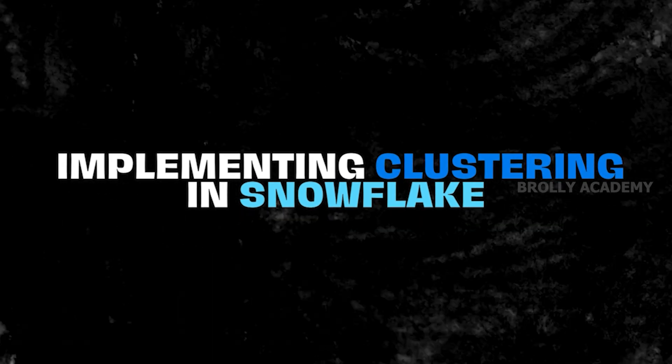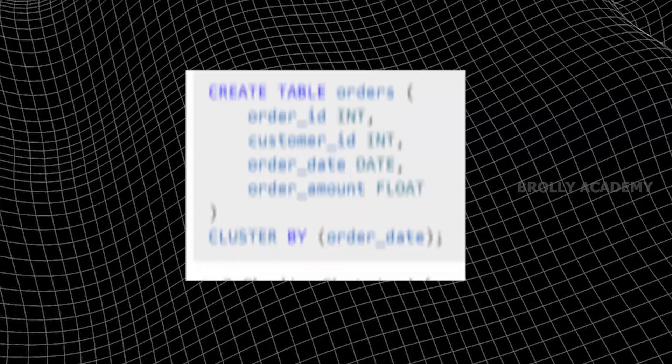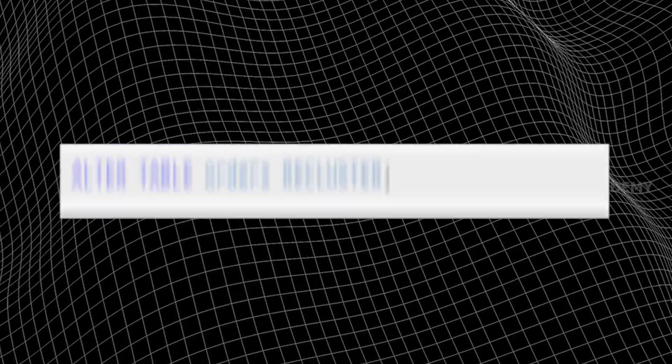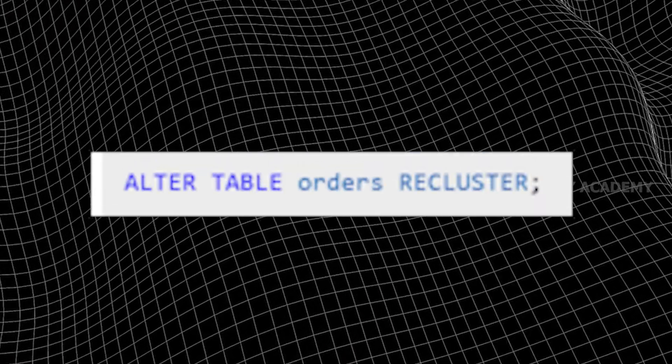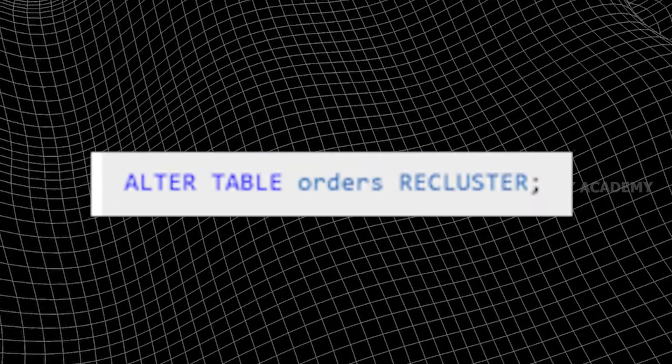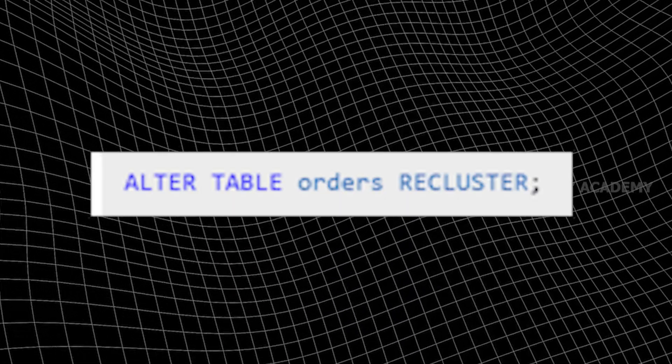Implementing clustering in Snowflake. Step 1: Create a clustered table — here we create a cluster table. Step 2: Checking clustering information — here we can check the table using a SELECT statement and check the table manually. Re-clustering a table: here we can select all the orders table and re-cluster it. This code lets us re-cluster the table manually.